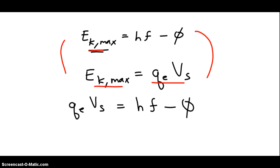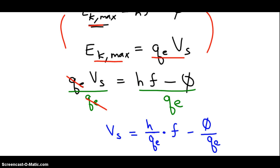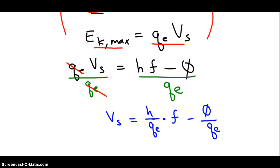If I divide the entire left side by the charge of an electron, and the entire right side by the charge of an electron, then I get this. And let's box this equation.